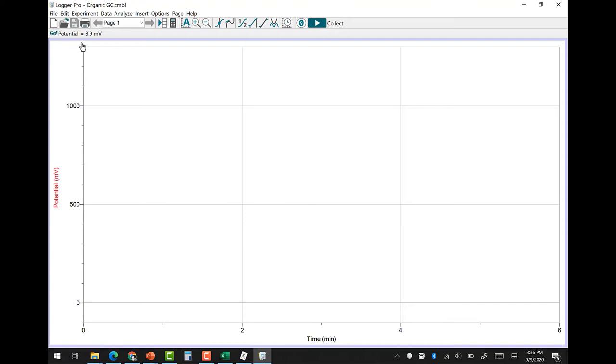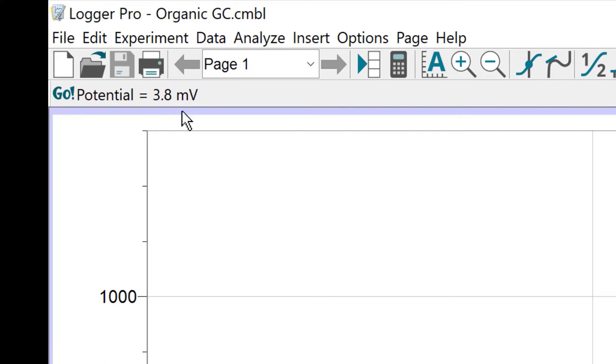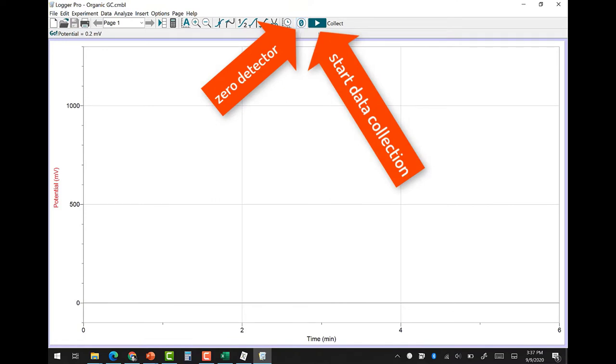If you see something else, close up Logger Pro and restart it by double-clicking the icon on the desktop. If you look in the upper left-hand corner, you can see an instantaneous readout of the signal. You can see here it's not zero. We'll want to zero the detector by pressing this button. Then you can inject your sample and press the Collect button to start the data collection.